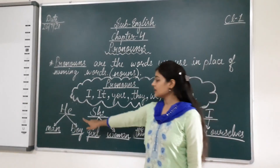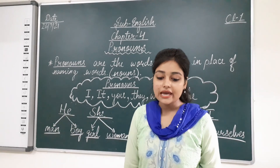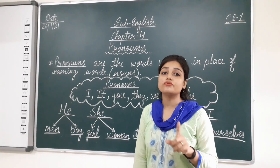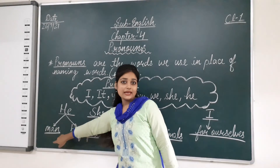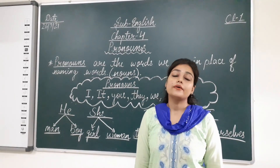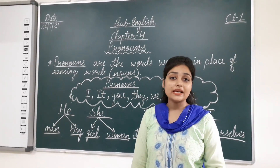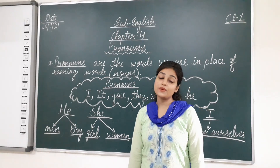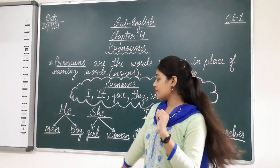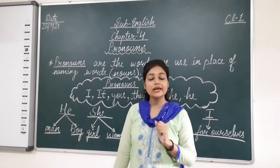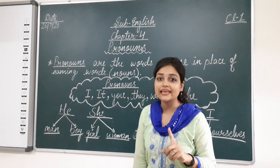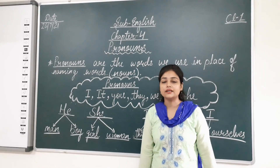Next is 'he'. He is used in place of the name of a man or a boy. For example, my brother is smart. Brother is a boy, so which pronoun do we use? He. He is smart.